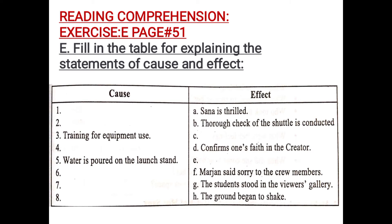Then in number three, the cause is given and you have to write the result — what happened after this. The cause is training for equipment use was conducted. So, what did it result in? What happened because of it? You have to write the result.